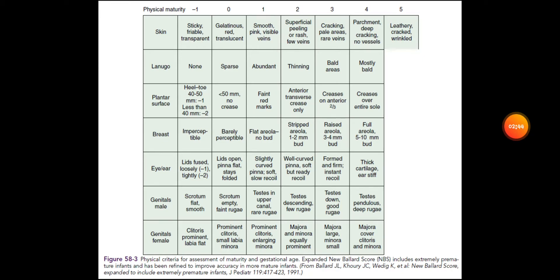The fifth parameter is eye and ear. If eyelids are fused loosely, that carries negative one point. If eyelids are fused tightly, that carries negative two points. If lids are open with pinna flat and stays folded, that is zero points. Slightly curved pinna with soft slow recoil carries one point. Well-curved pinna with soft but ready recoil carries two points. Formed and firm with instant recoil carries three points. Thick cartilage with stiff ear carries four points.